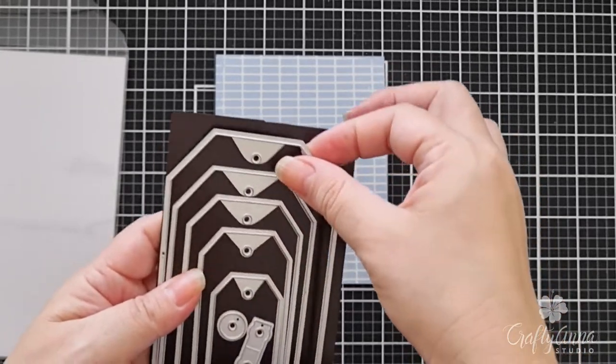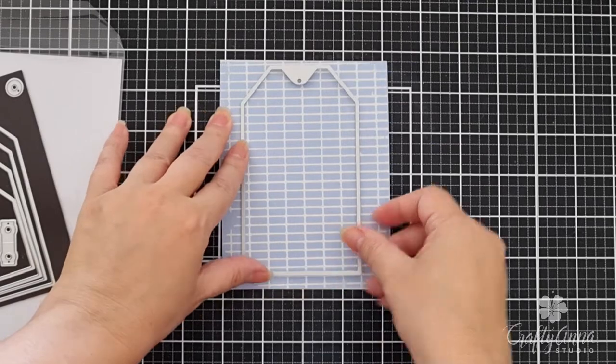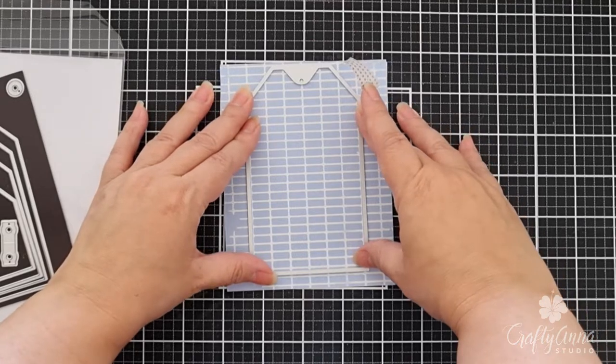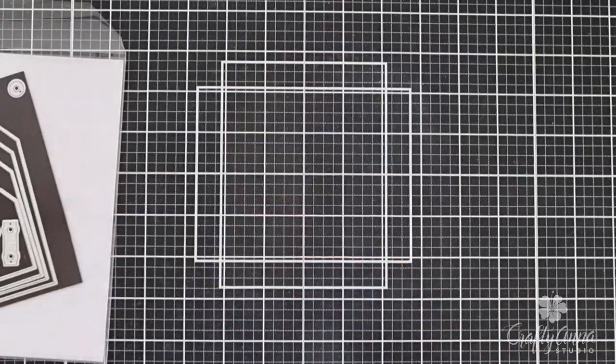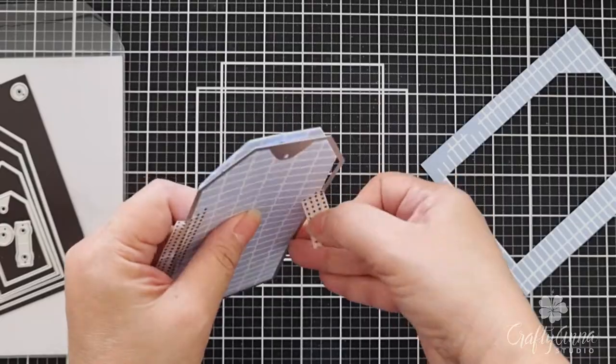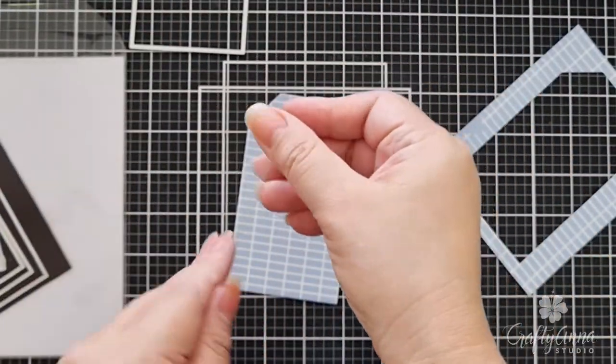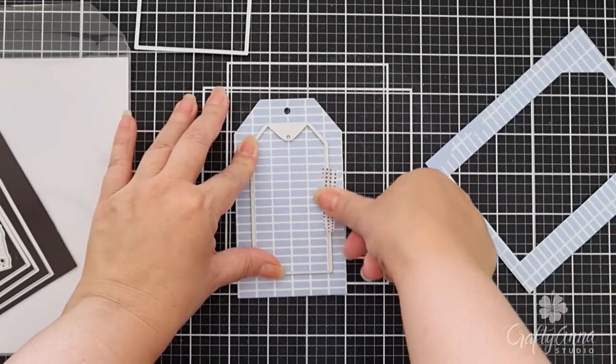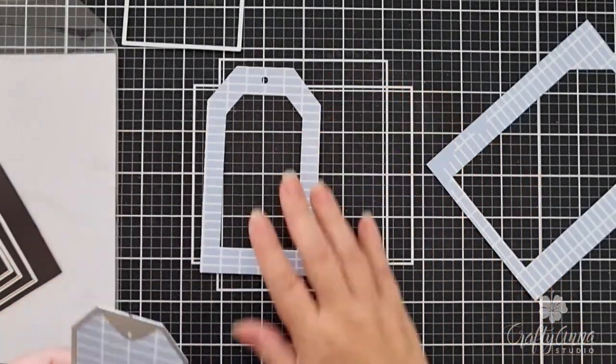Using the biggest die, measuring 2 3⁄4 by 4 3⁄4, I line it up onto the heat embossed tile pattern, making sure it's even on all sides. I remove the washi tape gently. Then I take a smaller die, measuring 2 by 3 5⁄8, line it up in the middle of the big die cut tag, making sure it's even on all sides, then die cut that out as well.